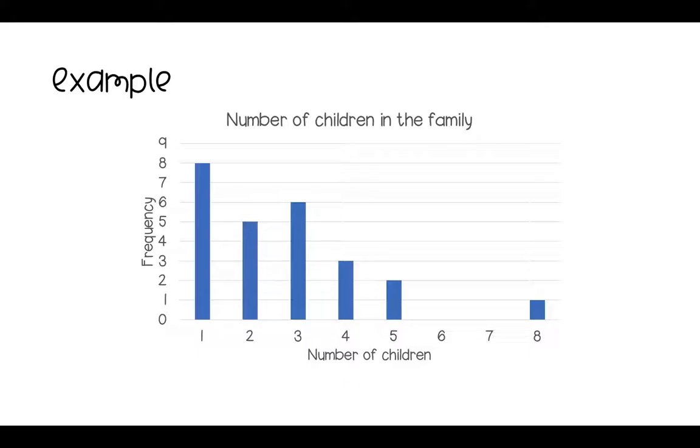So for example we have this graph here and we can see here we've got a number of children in the house or in a family. We've got 1, 2, 3, 4, 5. There's no families with 6 or 7 and then there's one family with 8.